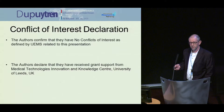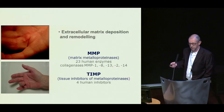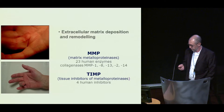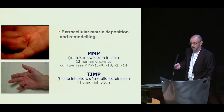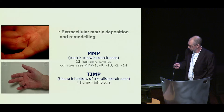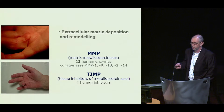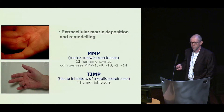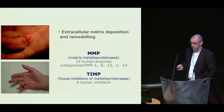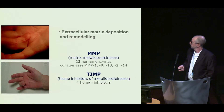I have no conflicts of interest other than a grant that funded this work. As the first speaker already told us, Dupuytren's disease is associated with the laying down of a collagen-rich extracellular matrix. The enzymes capable of remodeling that matrix come from the matrix metalloproteinase family, and they are held in check by a family of inhibitors — the tissue inhibitors of metalloproteinases.